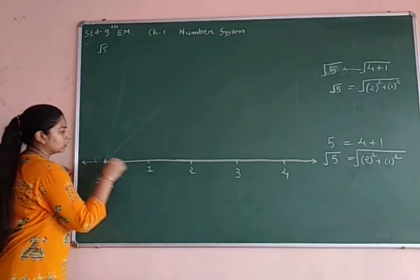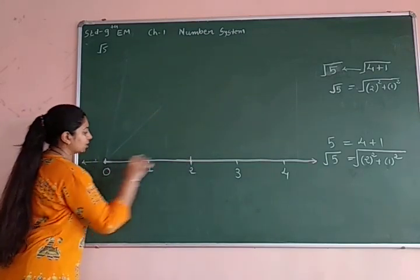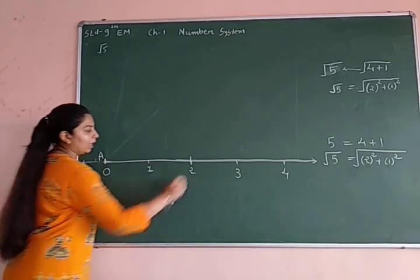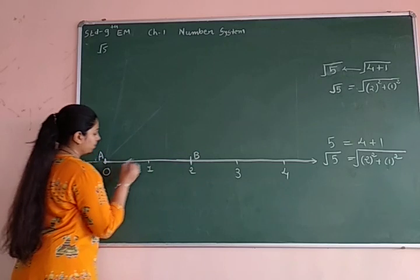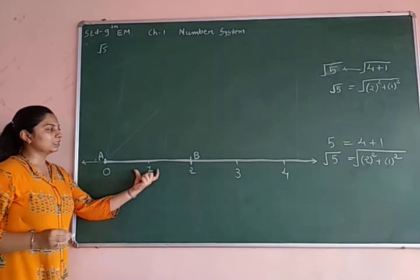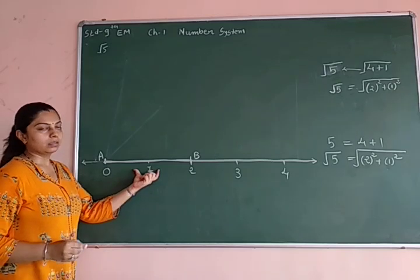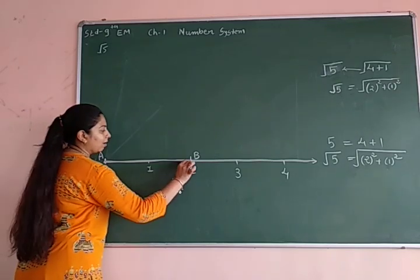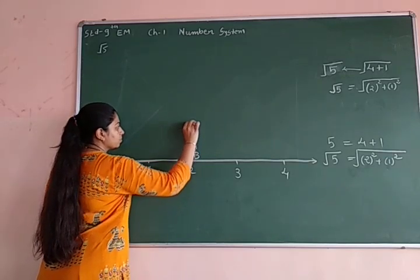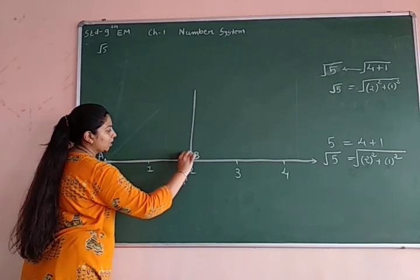So on this number line, from 0 to 2, this much distance I want. So let us know this is my point A and here is point B. So 0 to point A to point B, what is the distance? 2 unit. And here I draw a perpendicular line. Perpendicular line.